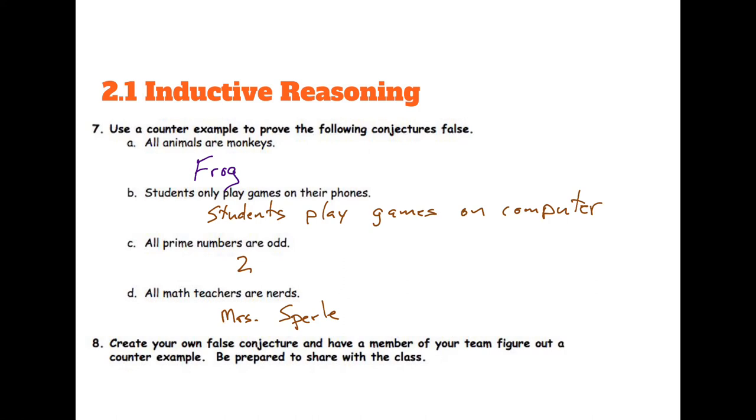Alright, so number two. Students only play games on their phones. So once again, can we come up with a way to make the first part true? So students only play games. Okay, cool. Yeah, on the computer. So when students play games on the computer, then they're not on their phone. So I've proven the first part true, that they play games, but the second part false. It's not only on their phones. They could also play on their computer.